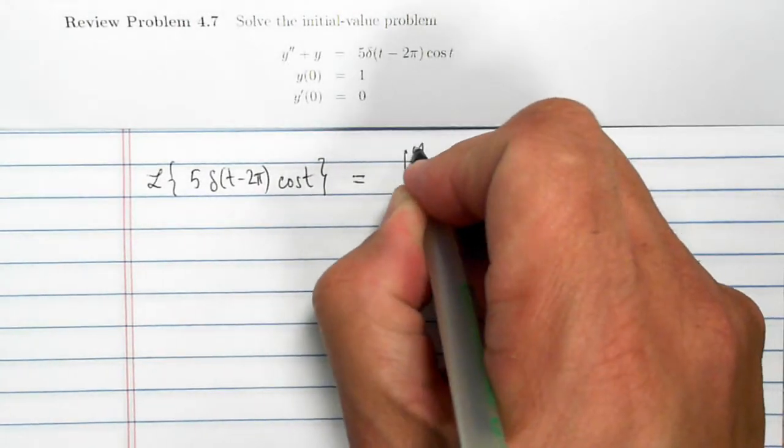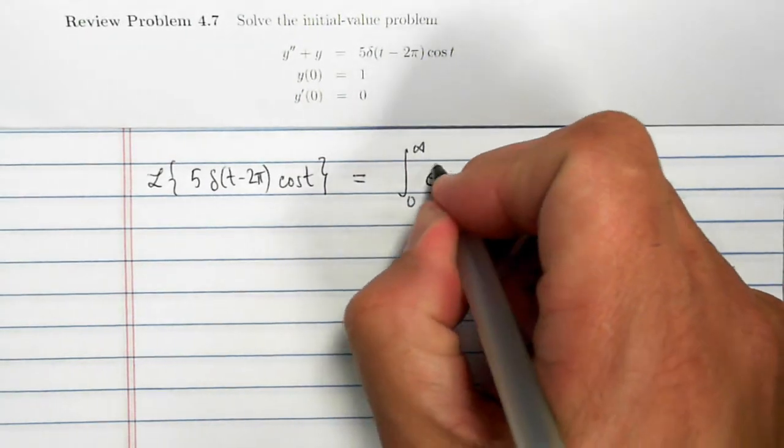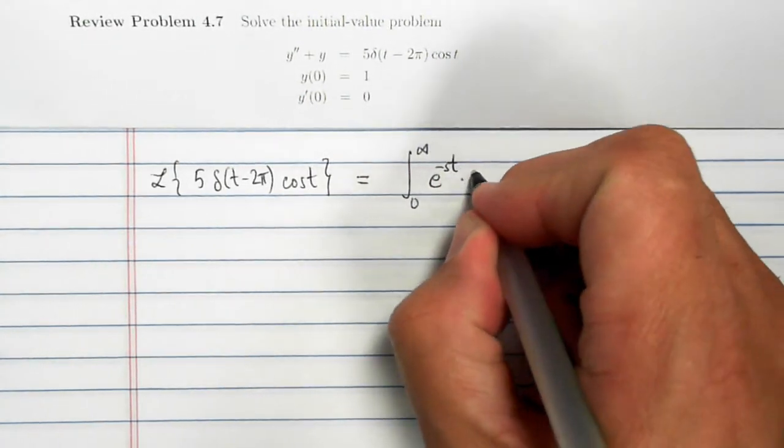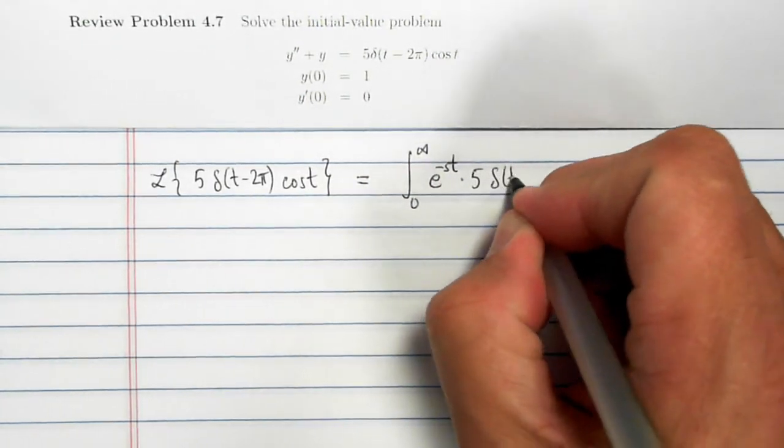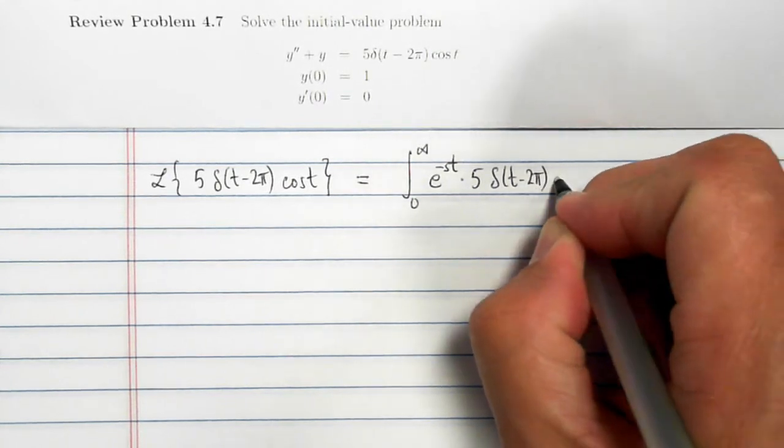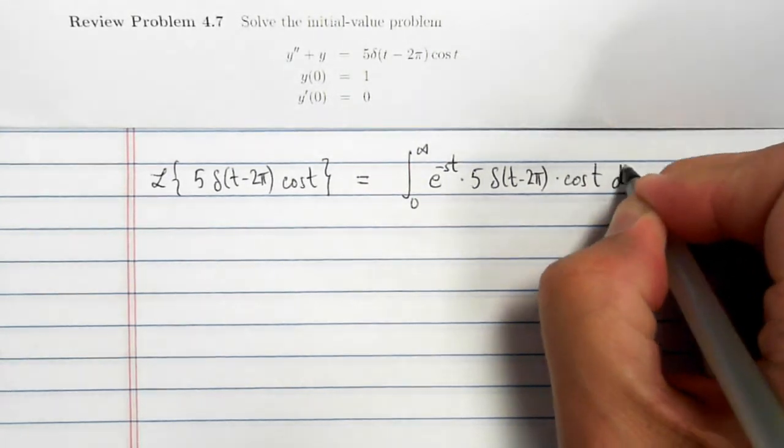By definition of the Laplace transform, that's the integral from 0 to infinity of e to the minus st times 5 times delta of t minus pi times the cosine of t dt.